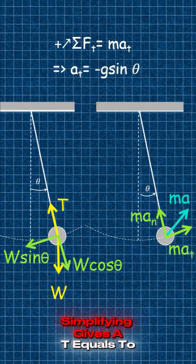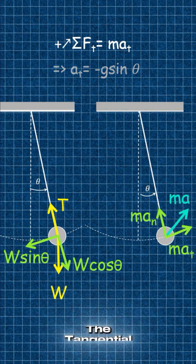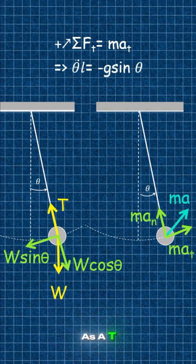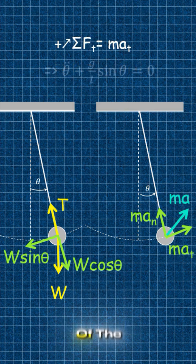Simplifying gives at equals negative g sine theta. The tangential acceleration relates to angular acceleration as at equals l theta double dot. Substituting this, we arrive at the equation of motion of the simple pendulum.